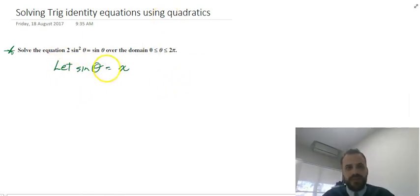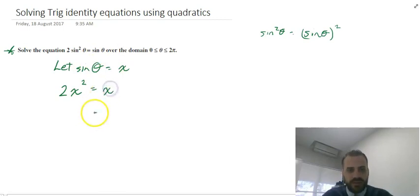So if I let sine theta equals x, then sine squared theta—remember that sine squared theta is really sine theta squared—so this 2 sine squared theta is going to be the same as 2x squared equals sine theta, which is x. 2x squared equals x. And now I just need to solve for x.